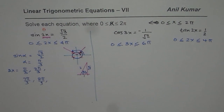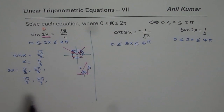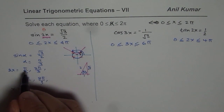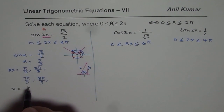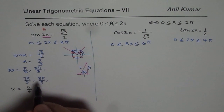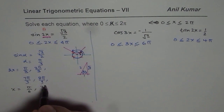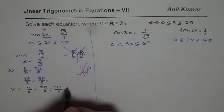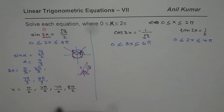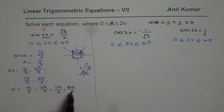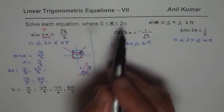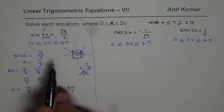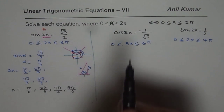To find x, divide each solution by 2: 2x = π/3 gives x = π/6; 2x = 2π/3 gives x = 2π/6; 2x = 7π/3 gives x = 7π/6; and 2x = 8π/3 gives x = 8π/6. You can verify that all x values fall between 0 and 2π. We get four different solutions for sin(2x).